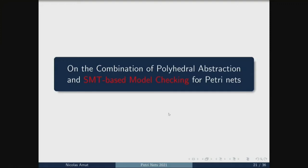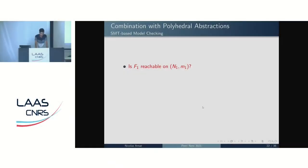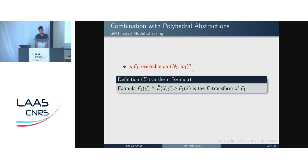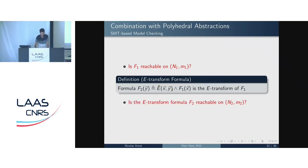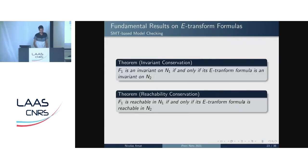Now I will go into more detail on the SMT-based model checking part. The initial problem is: given a reachability formula F1, is F1 reachable on the initial net N1? To answer this, we construct an E-transform formula composed of F1 and our linear system E, replacing places with variables and adding equality constraints for places common to both nets. We then ask: is the E-transform formula F2 reachable on the reduced net N2? This is a much simpler problem. The key theorems state that F1 is an invariant on N1 if and only if its E-transform formula is an invariant on N2, and the same holds for reachability.